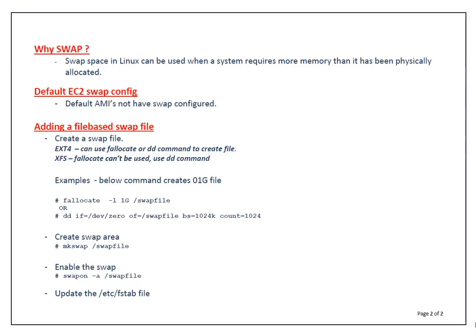The next step is to create a swap area. Creating a swap area means you are putting a label on the swap file indicating it is a swap file. To do so, run mkswap followed by the swap file name. One thing to note: you have to set the permissions of the swap file to 600, meaning the file is owned by root only. Next, enable the swap using swapon -a followed by your swap file. Finally, update your /etc/fstab file so this configuration will be persistent across reboots.